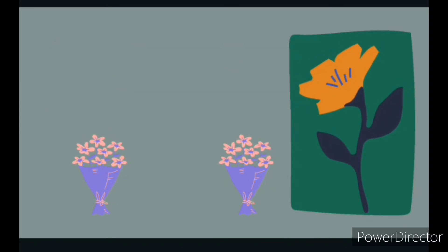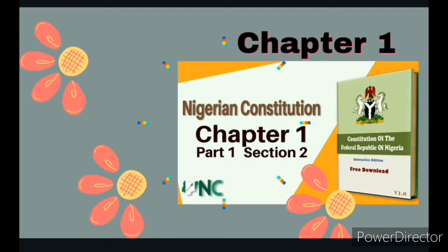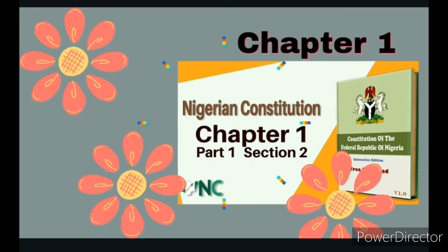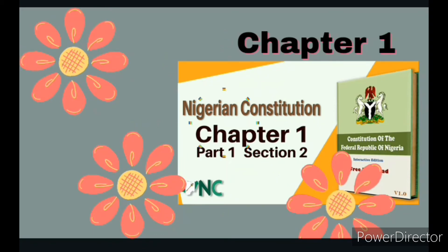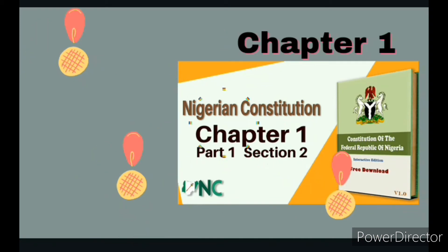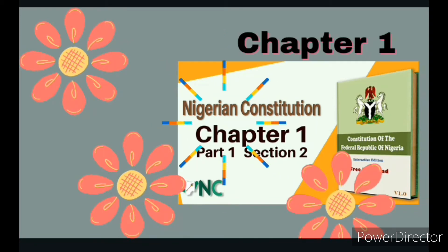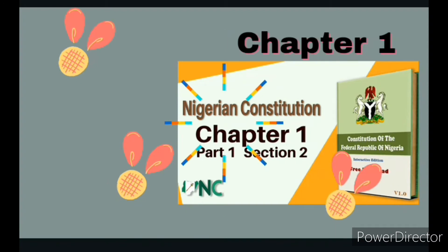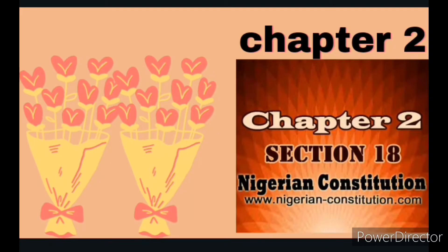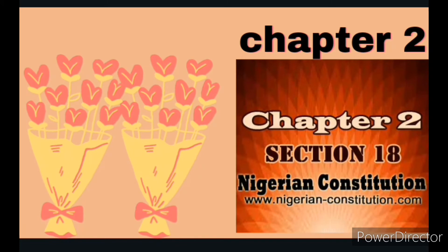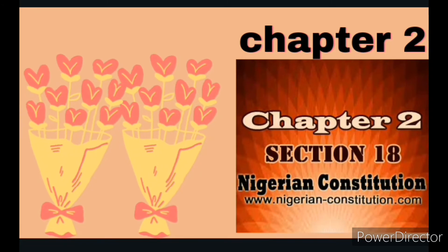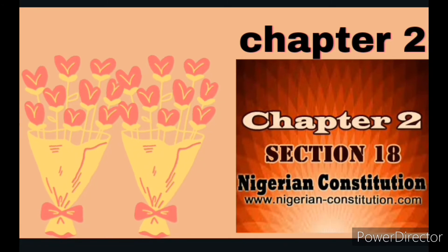Chapter one states that Nigeria has 36 states and a federal capital territory. Chapter two states about the responsibilities of the Nigerian government and the responsibilities of Nigerian citizens.